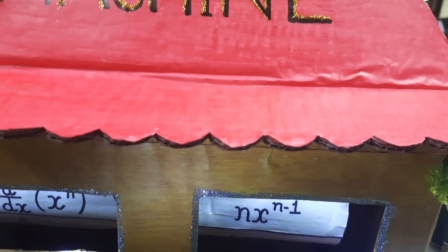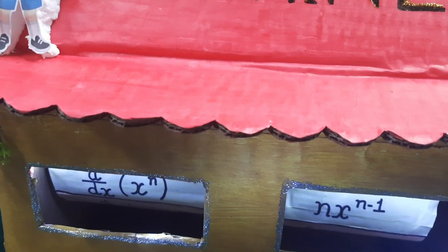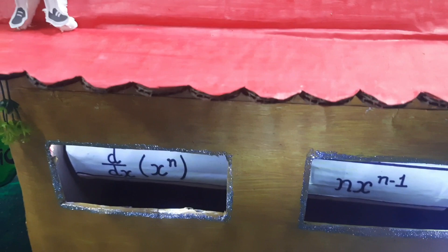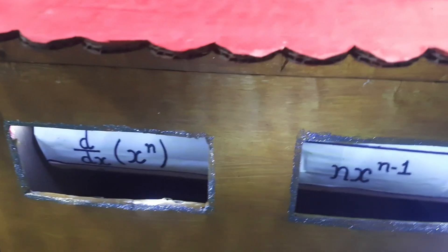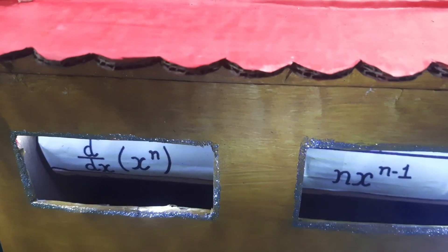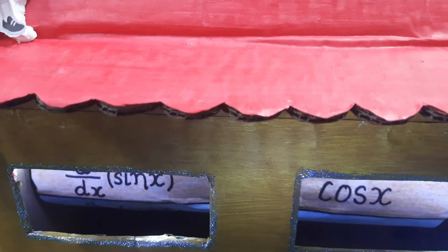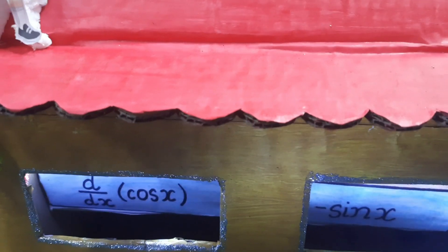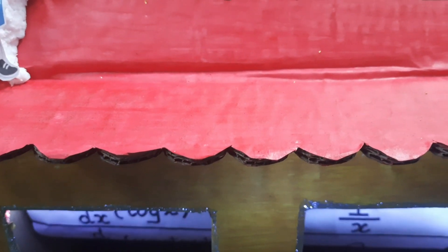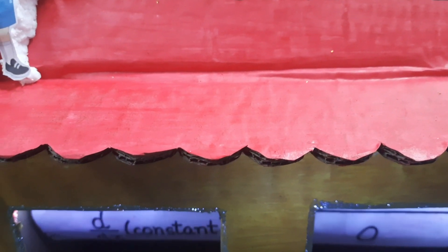For example, this is the way to rotate this one. The formula of derivative of x to the power n is nx to the power n minus 1. Derivative of sin x is cos x. Derivative of cos x is minus sin x. Derivative of exponential of x is exponential of x. Derivative of log x is 1 upon x.